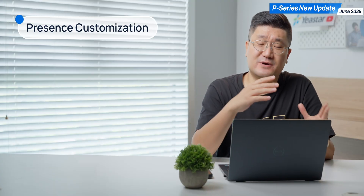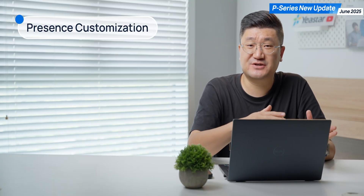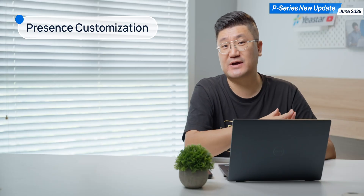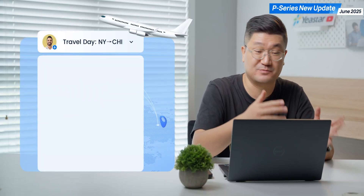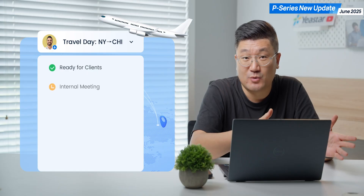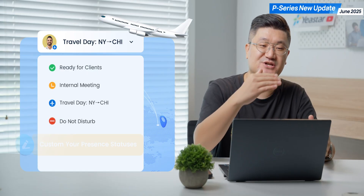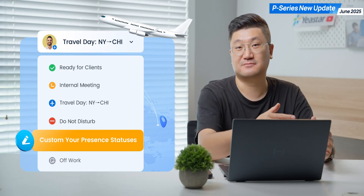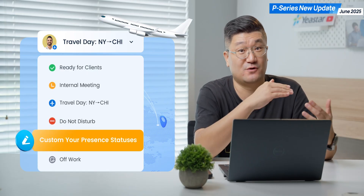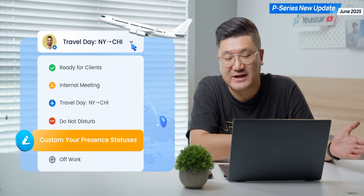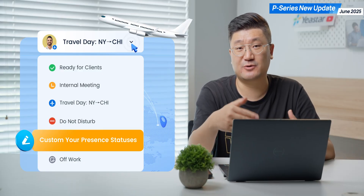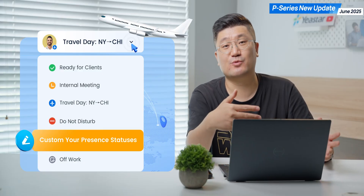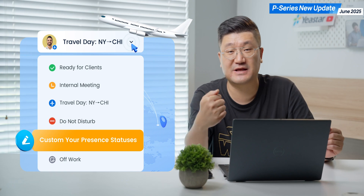Number one, we got a presence customization. On the P-Series system, we have a couple of presets for the presence. Previously, you're not able to change any of them — that's all presets. But sometimes we really need to customize it, especially when we have integration with a third-party platform.